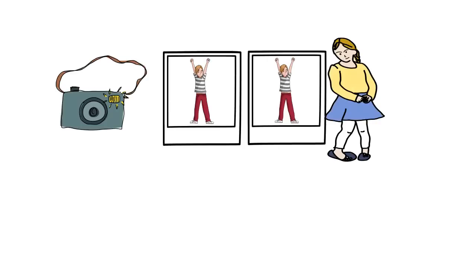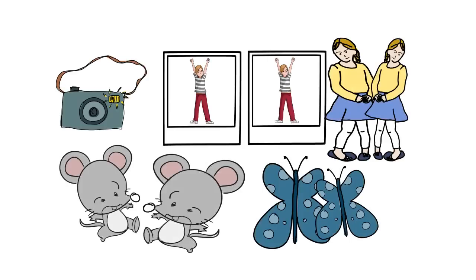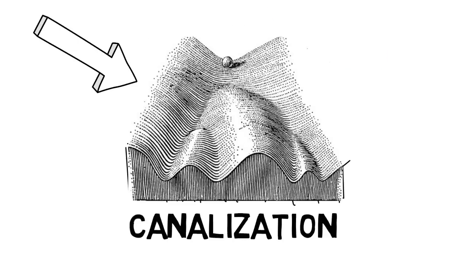Now evolution has tailored the system so precisely that if two copies of the same DNA blueprint develop, like identical twins, you get basically the same picture. A scientist named Waddington called this developmental reproducibility canalization.